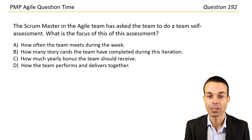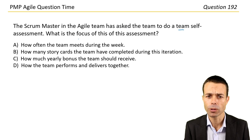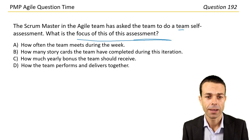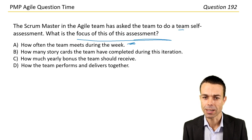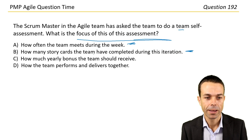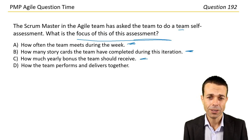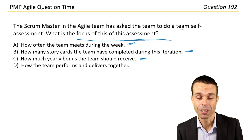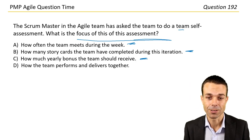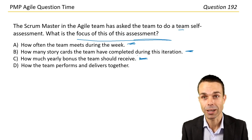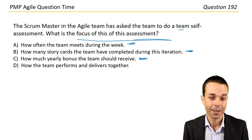The Scrum Master in an Agile team has asked the team to do a self-assessment. What is the focus of this self-assessment? Is it how often the team meets during the week? How many story cards the team have completed — no, that's more for velocity. How much yearly bonus the team should receive — no, that's not really related to Agile. Or how the team performs and delivers together?